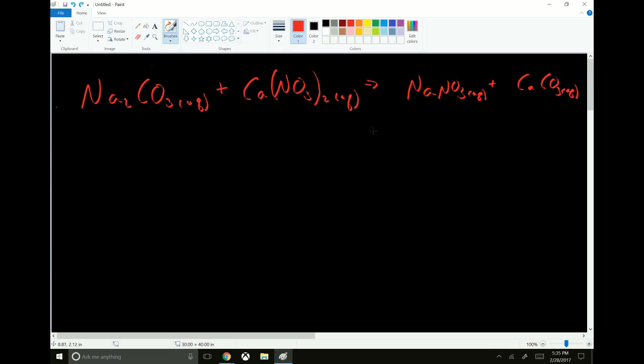So we have sodium, sodium, carbonate, calcium, and nitrate. Sodium starts off with 2, carbonate starts off with 1, calcium with 1, and nitrate with 2. And over on the right, it's 1, 1, 1, and 1.